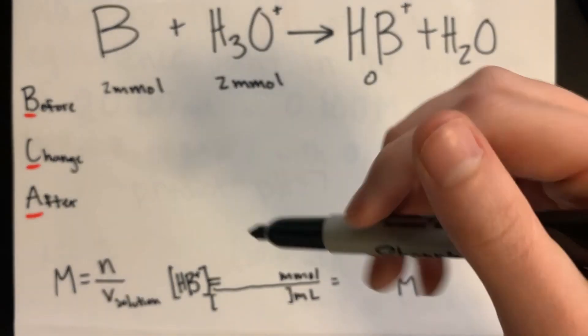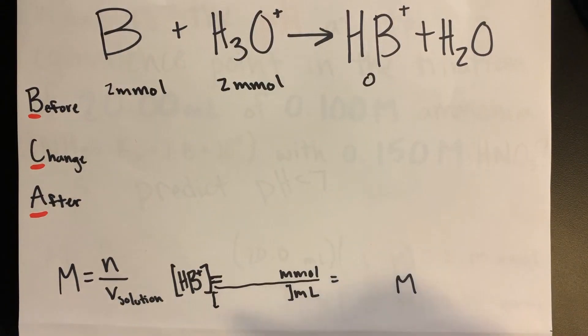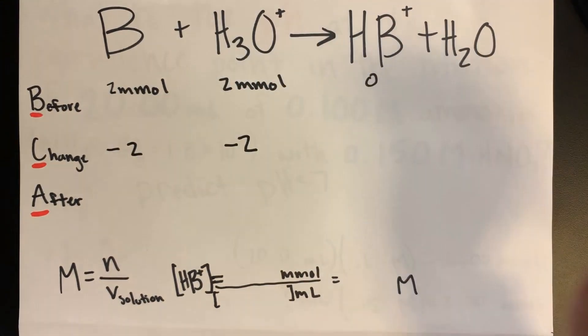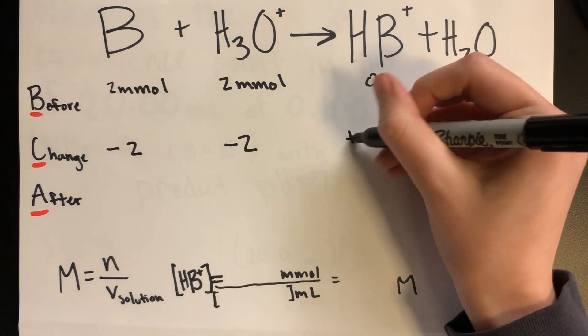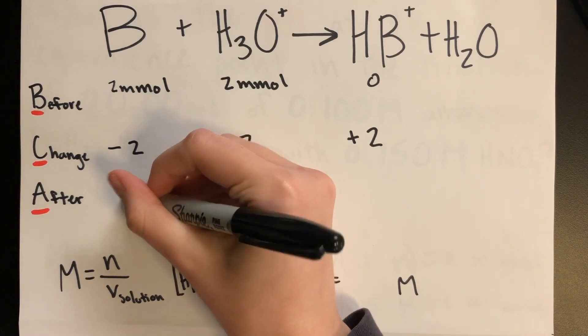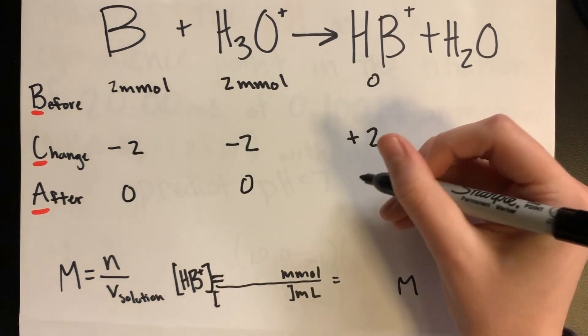In the change line, because it is a stoichiometric problem, it is a limiting reagent problem. And since they are both equal, we will subtract 2 millimoles from both. And on the product side, we will add 2 millimoles. So the after line will be 0, 0, and 2.